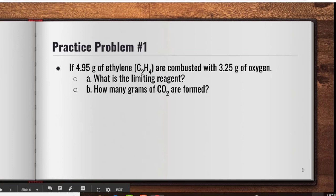Let's take a look at a sample problem. If 4.95 grams of ethylene are combusted with 3.25 grams of oxygen, we want to know what is the limiting reagent and how many grams of carbon dioxide are actually burned. We're actually given two things in the problem: grams of ethylene as well as grams of oxygen. The question is asking for the limiting reagent as well as how many grams of carbon dioxide are formed.